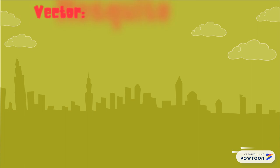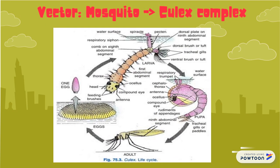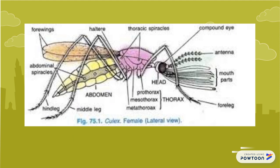The vector is the mosquito from the Culex complex. Its life cycle starts at the egg stage, followed by the larva, pupa, and adult stage. The eggs are laid on water, so we have to be careful with water. And we can see on the slide the life cycle. We can observe the morphology of the mosquito Culex, its head, its abdomen, and all its characteristics.